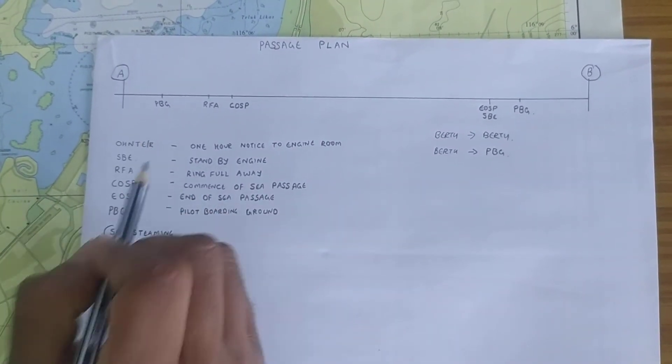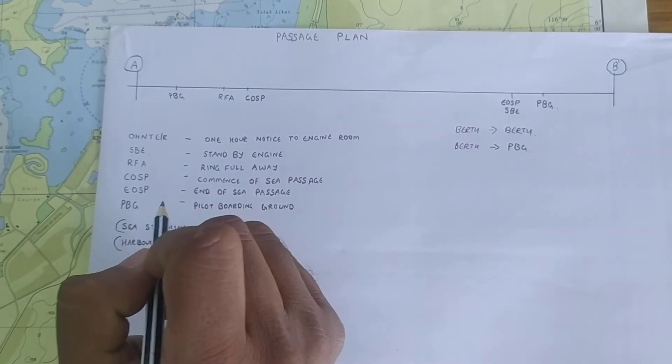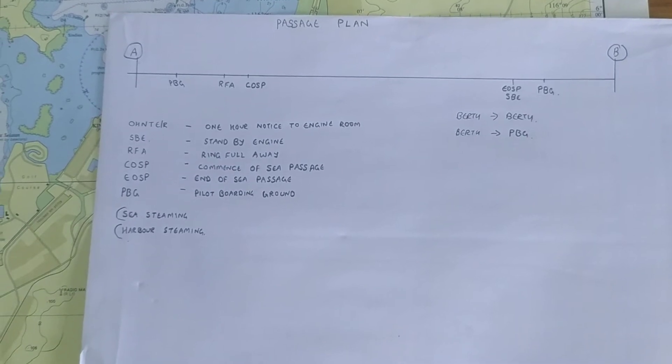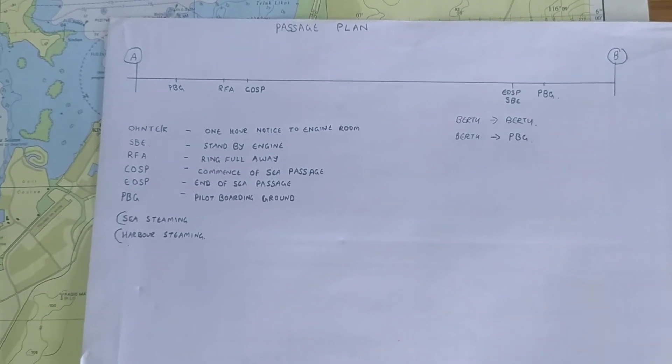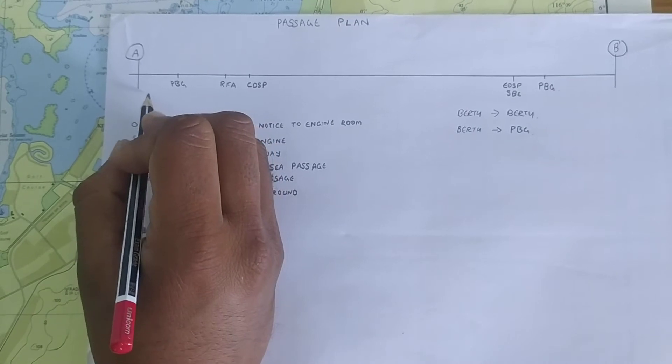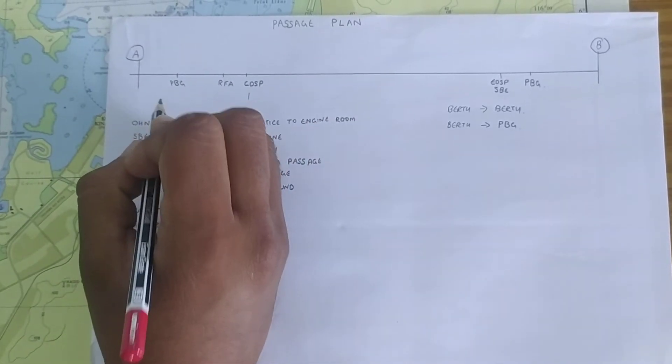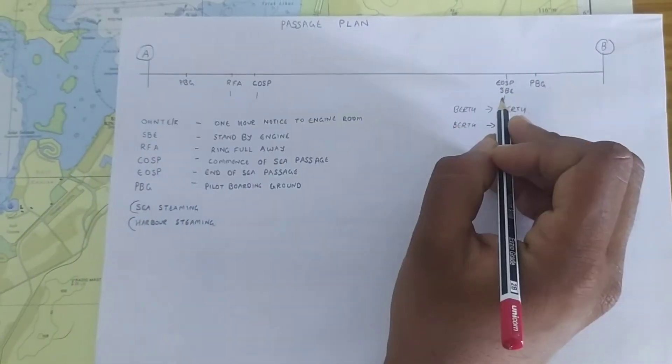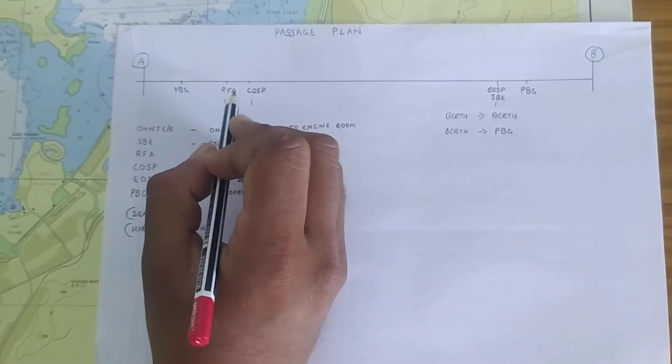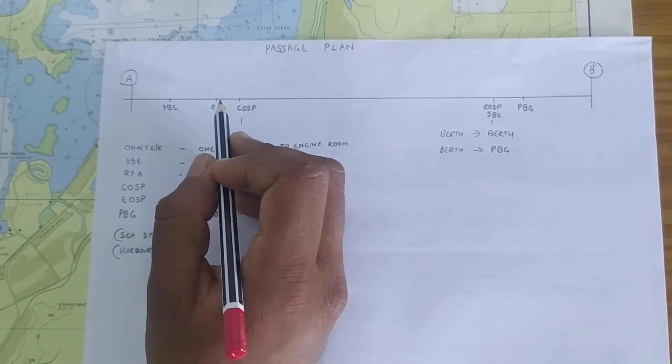What is RFA? RFA means, once you are finished with your maneuvering speed, the engine is put into full ahead, even if you are putting it to full ahead, the engine requires some time to come up to the full RPM. So, it is up to the master if he wants to take the distance of sea steaming from COSP to standby engine or from RFA to standby engine. The time between this RFA and COSP is the time required for the main engine to increase the RPM to the full away RPM.